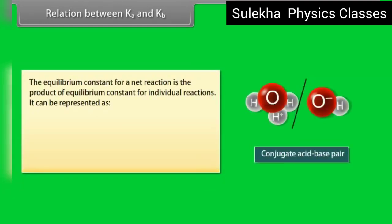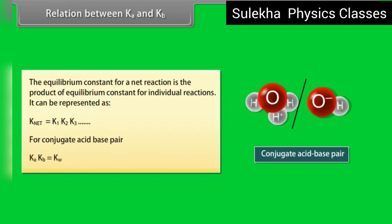Relation between Ka and Kb: the equilibrium constant for a net reaction is the product of equilibrium constants for individual reactions — Knet = K1 × K2 × K3 … For a conjugate acid-base pair, Ka × Kb = Kw.